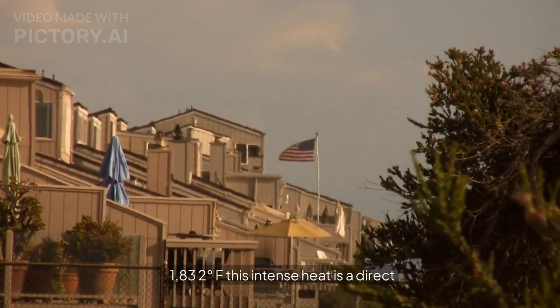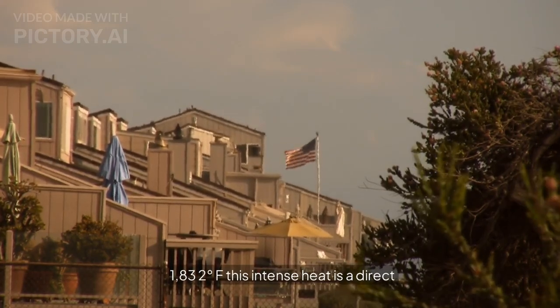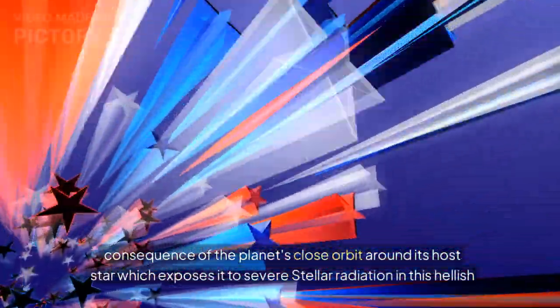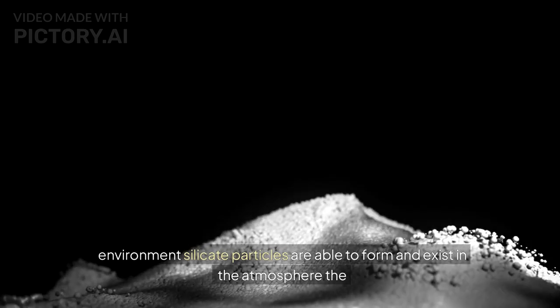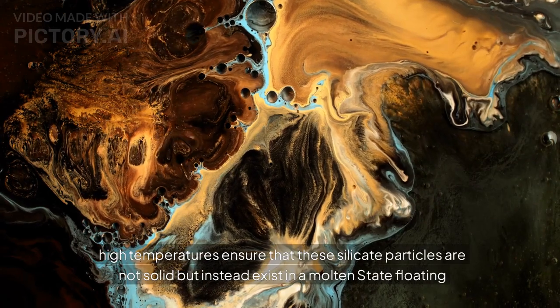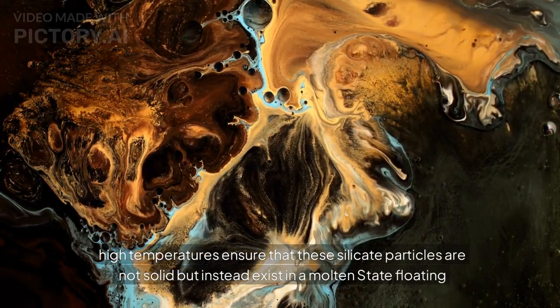This intense heat is a direct consequence of the planet's close orbit around its host star, which exposes it to severe stellar radiation. In this hellish environment, silicate particles are able to form and exist in the atmosphere. The high temperatures ensure that these silicate particles are not solid but instead exist in a molten state, floating in the atmosphere.